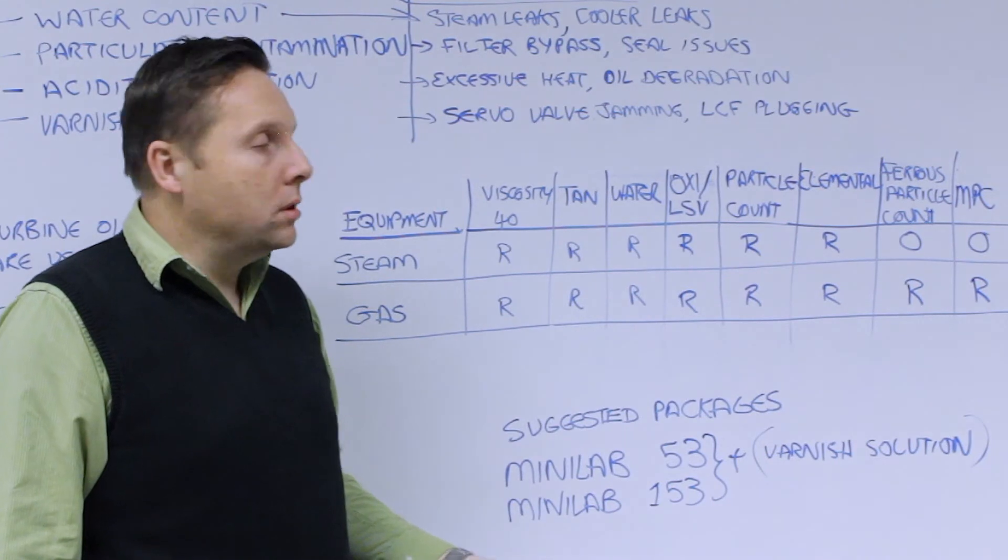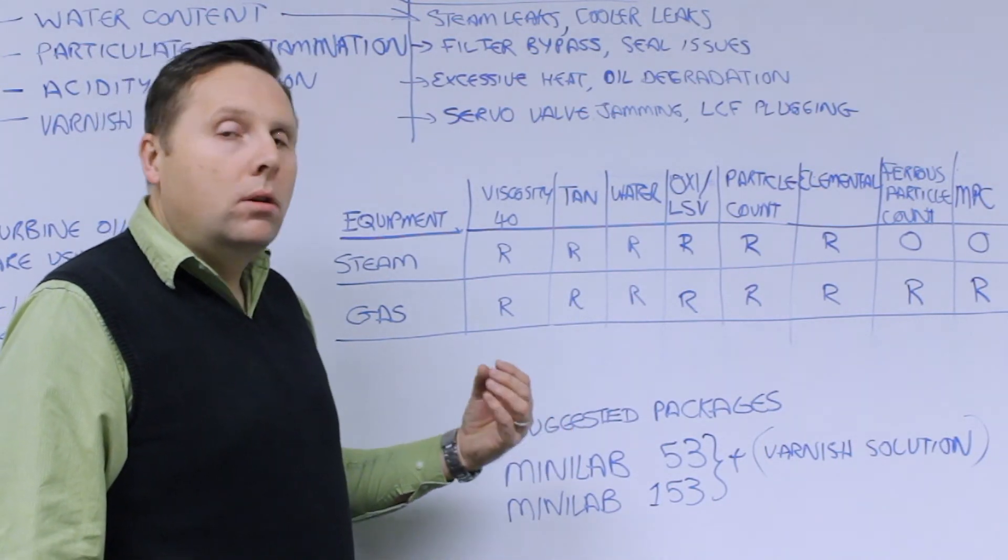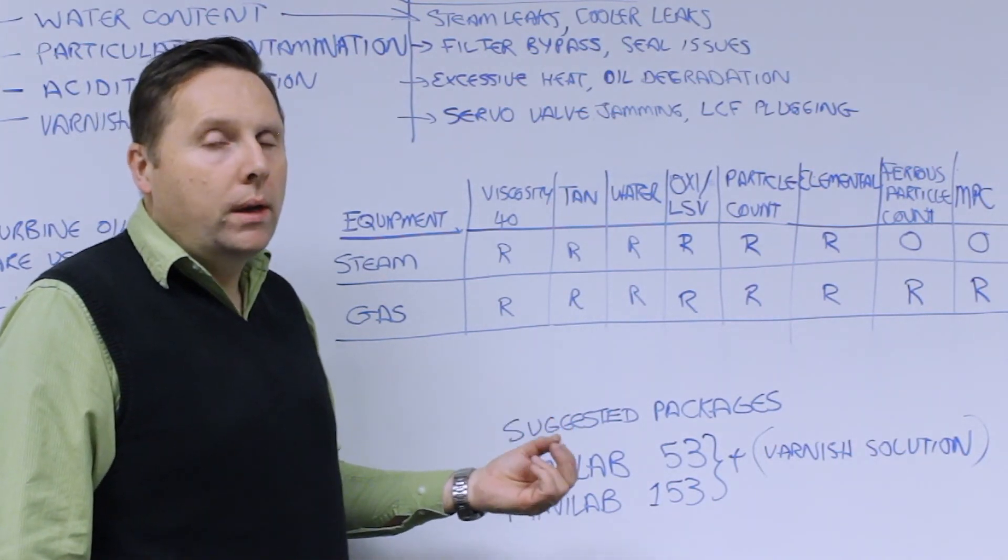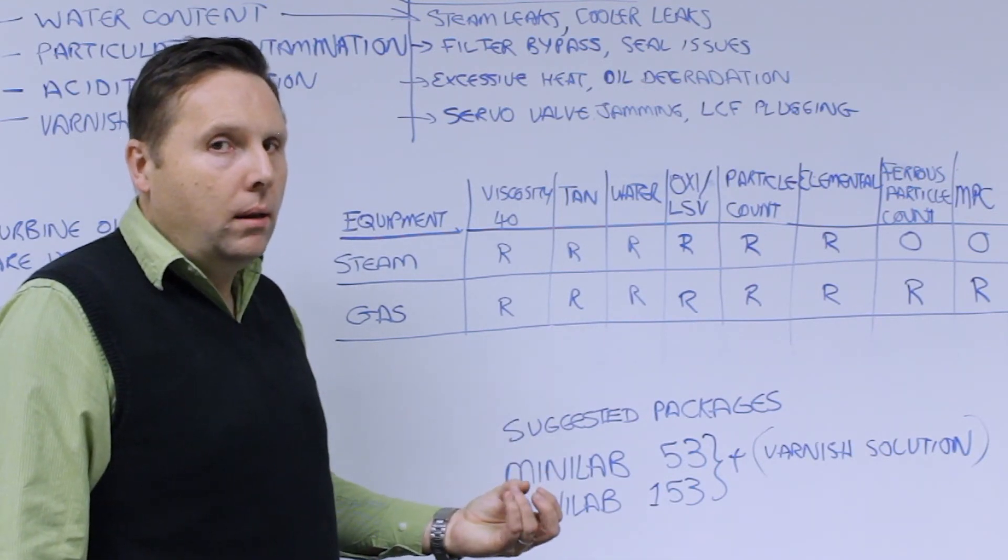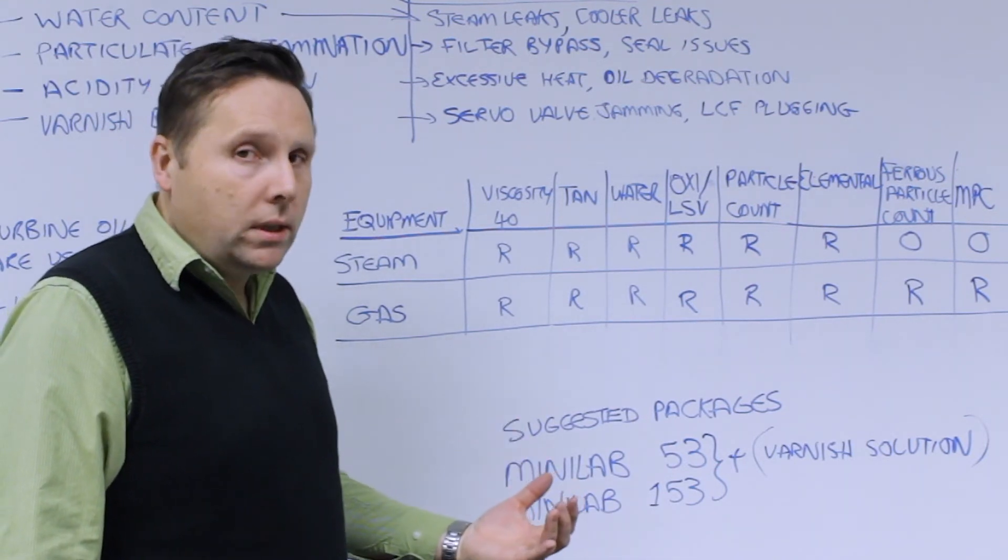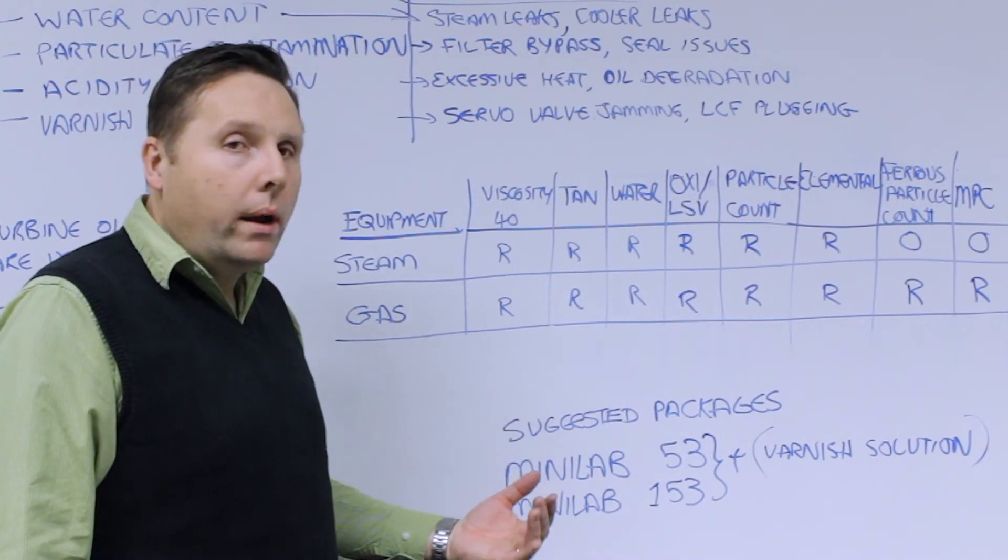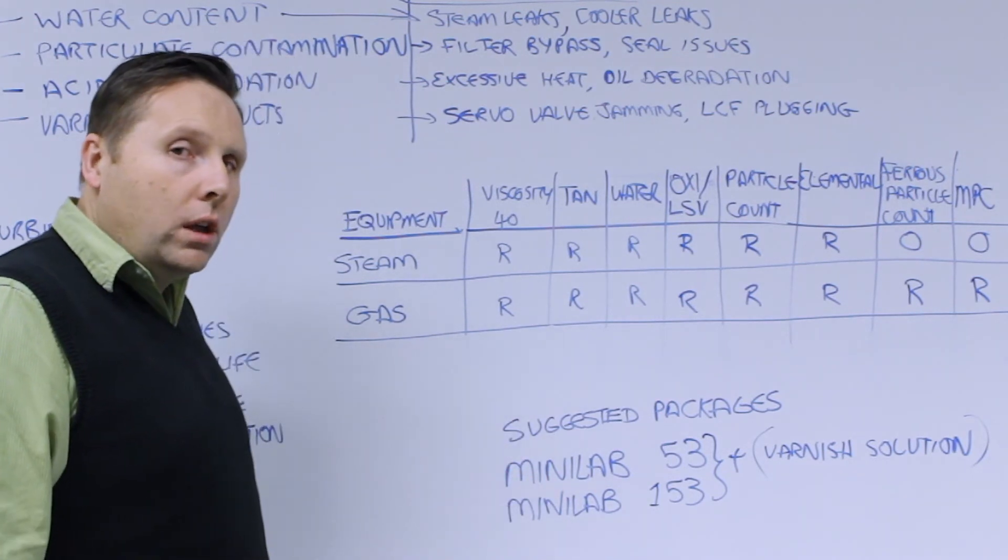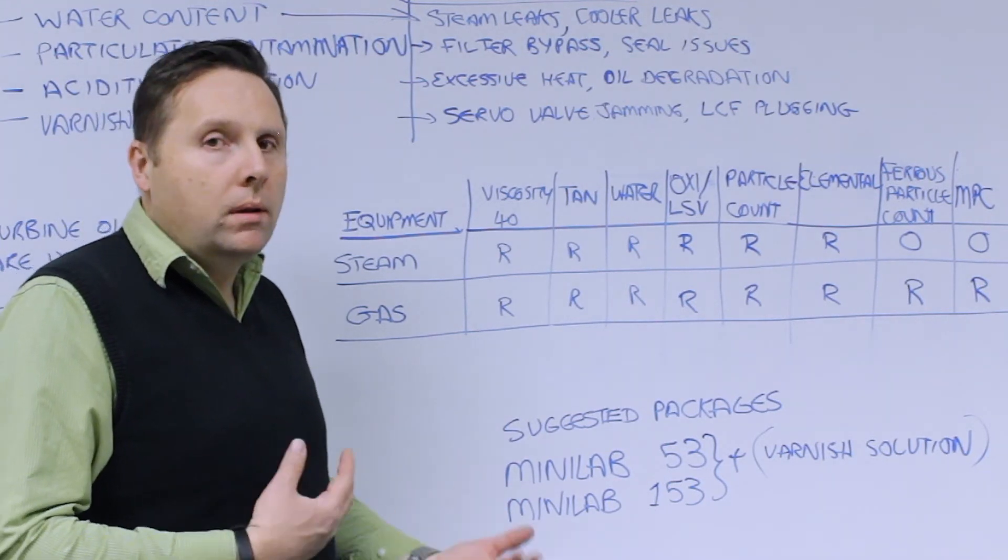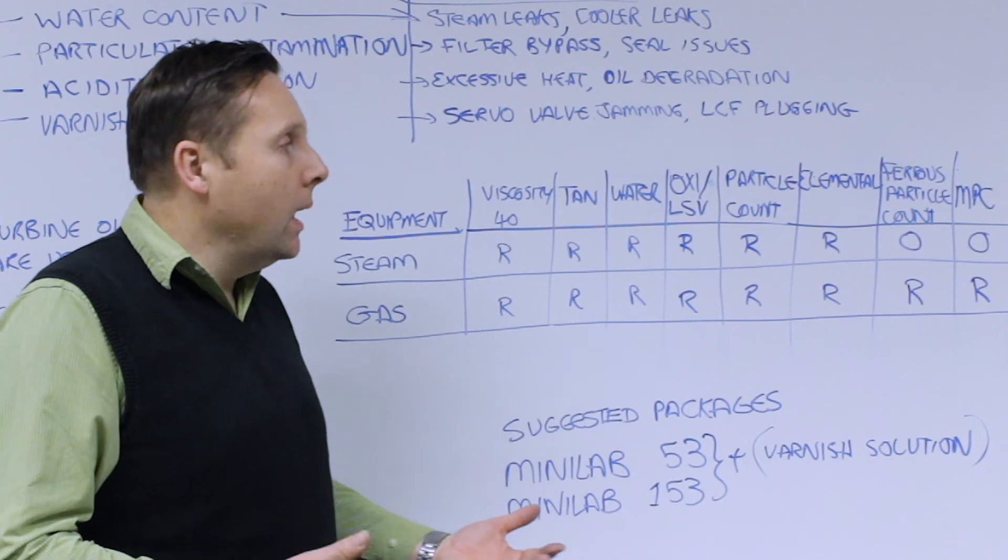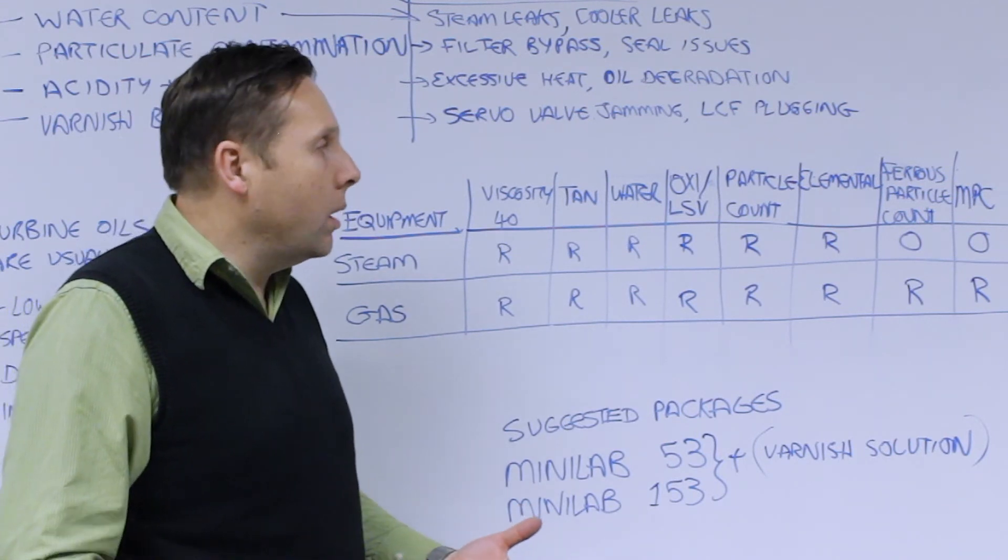Elemental is very important because what it does is it looks at trace amounts of wear debris that could be indicative of potential wear issues occurring in this system. Generally we don't expect to see wear but if there is wear because you're such a large volume of oil the dilution ratio is quite dramatic. So even small trace amounts of ppm like one or two ppm can indicate a wear problem.